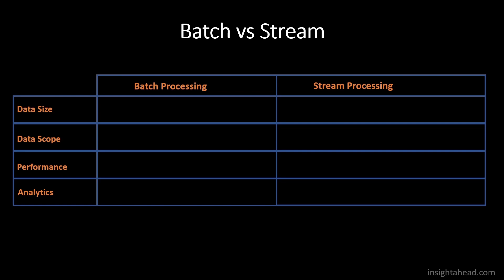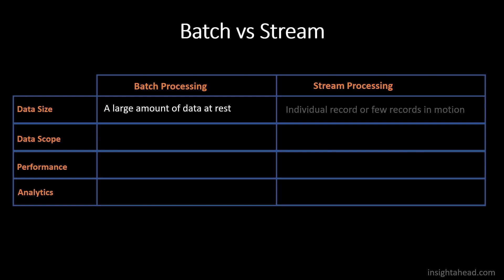Let's compare batch and stream processing. With batch processing, we know that the data size is quite large. Most of the time we will process all the data available to us, and the data must be at rest, so the size must be known and should not change during the processing. This is not the case with stream processing. With stream processing, we only process individual records or just a few records, and the data are in motion, which means the data have been streamed constantly into the system.